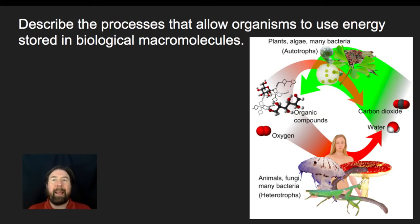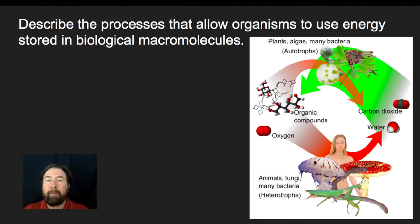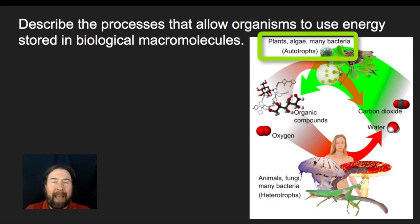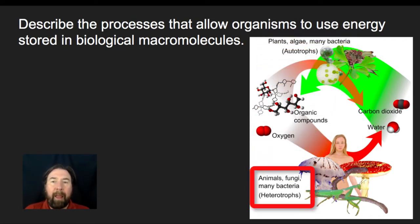First we're going to describe the processes that allow all organisms to use energy stored in biological molecules. As a quick refresher, when we look at organisms, we classify them as either being autotrophs — things like plants, algae, and bacteria — that can make their own carbohydrates from raw materials, specifically carbon dioxide and water. Then we also have heterotrophs, which are things like animals, fungi, and bacteria that have to consume other organisms in order to gain energy.